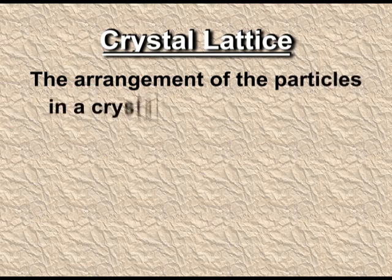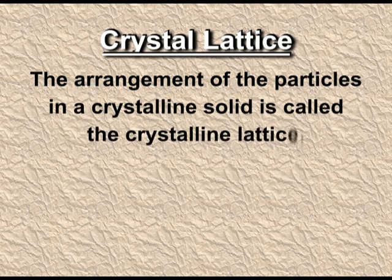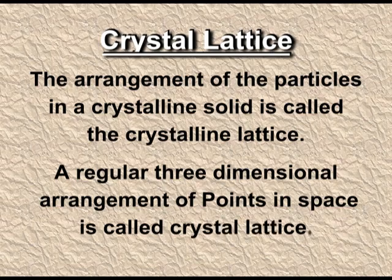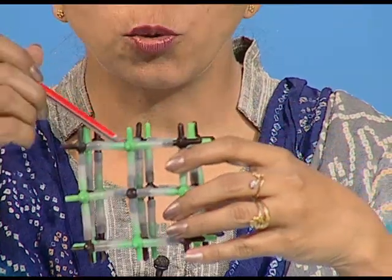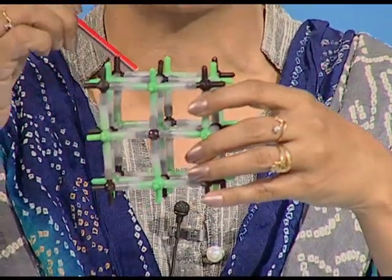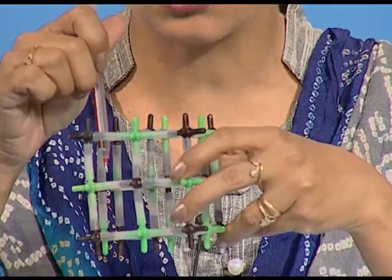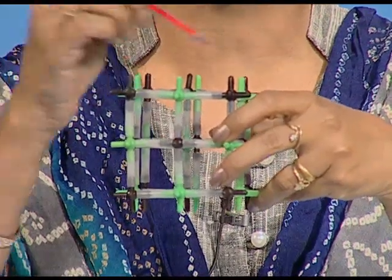Let's see what a crystal lattice is. The arrangement of particles in a crystalline solid is called the crystalline lattice — a regular three-dimensional arrangement of points in space. For example, this is a sodium chloride crystal. You can see that the constituent particles are regularly arranged, and there is a repeating unit that repeats itself in three dimensions to generate the crystal lattice. This repeating unit is called the unit cell — the basic constituent of a crystal lattice.